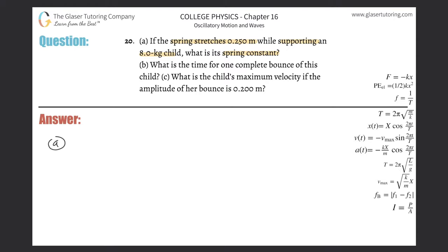The best thing to do is to draw a free body diagram. First, draw a simple picture: you have a spring here and a child hanging from it. This child has a mass of eight kilograms, and the spring has a certain stretch — the spring stretches 0.25 meters.